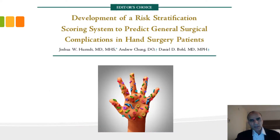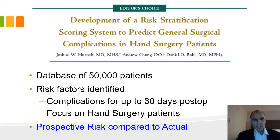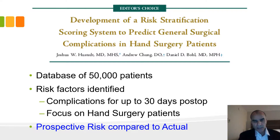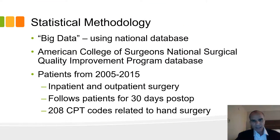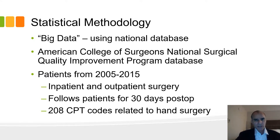Recently, there was an article published in the Journal of Hand Surgery that seems to answer this question about predicting risk. Let's talk about how it applies to our patients. They used a database of over 50,000 patients, identified risk factors and complications for up to 30 days post-op, and focused on hand surgery patients. Then they compared the prospective risk to the actual risk found in a subsequent analysis. This is big data methodology using a national database.